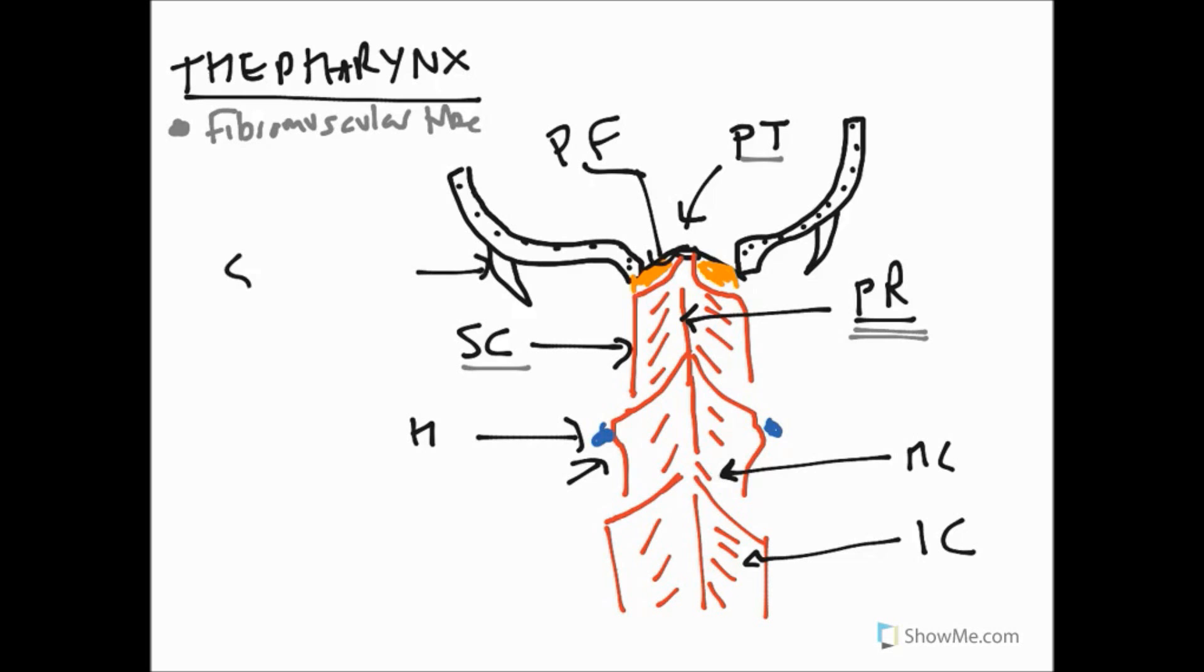And going down to our inferior constrictor, the inferior constrictor attaches to the cricoid cartilage and to the thyroid cartilage as well, and the ligament that spans these and crosses the cricothyroid muscle.